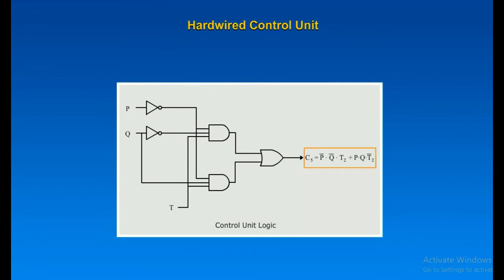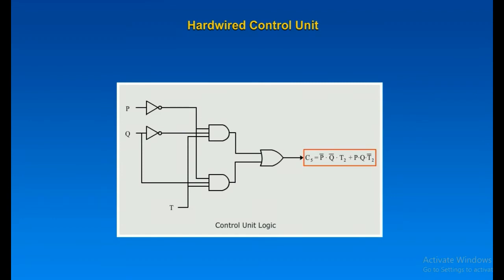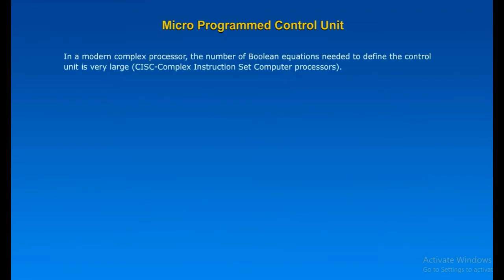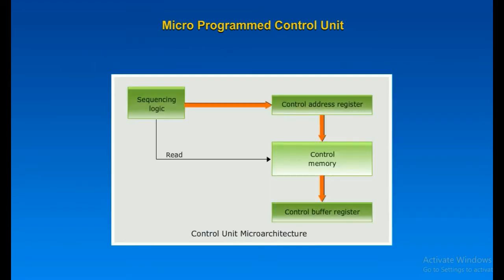To define the hard-wired implementation of a control unit, all that remains is to discuss the internal logic of the control unit that produces output control signals as a function of its input signals. Essentially, for each control signal, a boolean expression must be derived as a function of the inputs. We define two new control signals P and Q: PQ=00 is the fetch cycle, PQ=01 is the indirect cycle, PQ=10 is the execute cycle, and PQ=11 is the interrupt cycle. In a modern complex processor, the number of boolean equations needed to define the control unit is very large, making implementation of a combinatorial circuit extremely difficult.